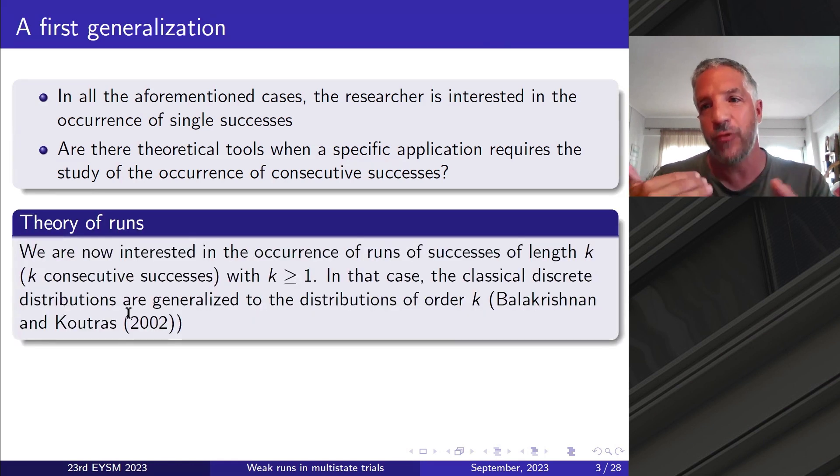These questions help us to enter the theory of runs. So we are now interested in the occurrence of runs of successes of length k, and I mean k consecutive successes. Of course k can be greater or equal to one. In that case, the classical discrete distributions are generalized to the distributions for k runs. For a review in the area till 2002, I recommend the excellent book of Balakrishnan and Koutras, and of course there is much work done till then.